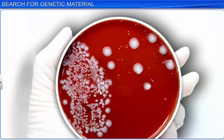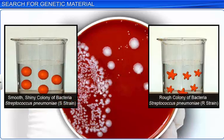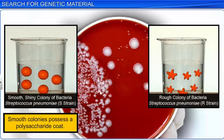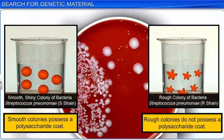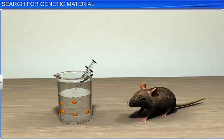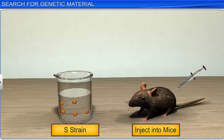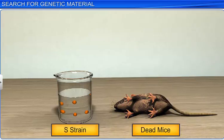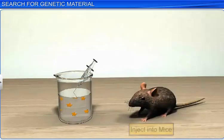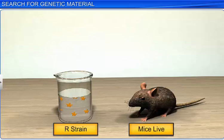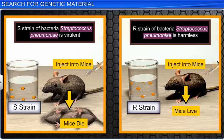Frederick grew the bacteria in a culture plate and found that they were of two forms: the smooth, and the rough. The smooth shiny colonies, or the S strain of the bacteria, possessed a mucus or polysaccharide coat, while the rough colonies, or the R strain, had no such coat. When the mice were injected with the S strain, they died of pneumonia infection, while those injected with the R strain did not develop pneumonia. This proved that the S strain of bacteria was virulent or lethal, while the R strain was harmless.